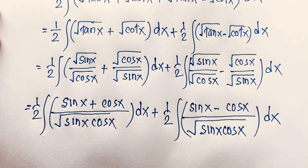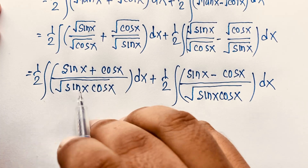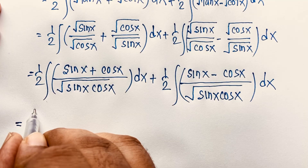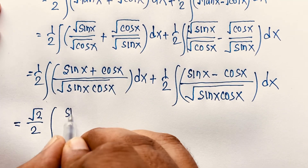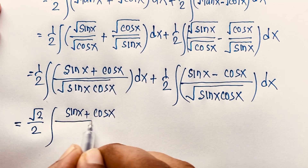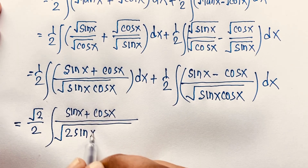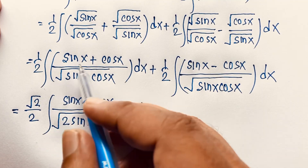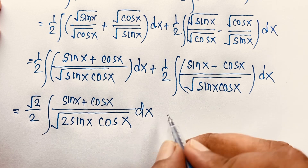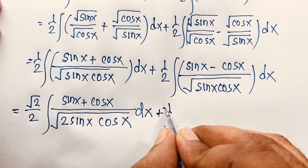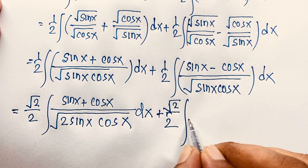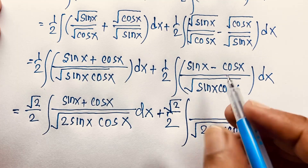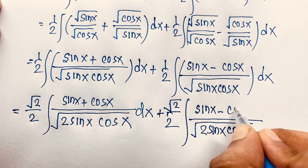Since 2 sin x cos x = sin 2x, I balance by introducing square root 2 over 2. So it becomes: (square root 2)/2 times integral of (sin x + cos x) times square root(sin 2x) dx, plus 1 over 2 times square root 2 times integral of (sin x − cos x) times square root(sin 2x) dx. After applying 2 sin x cos x = sin 2x and simplifying, the square root 2 factors cancel appropriately.